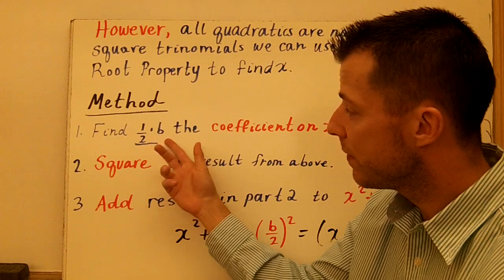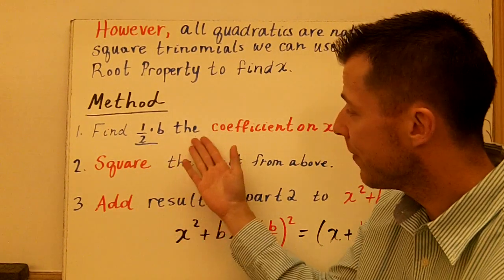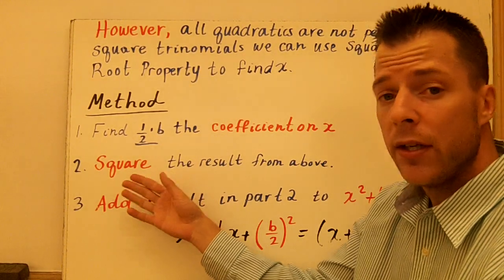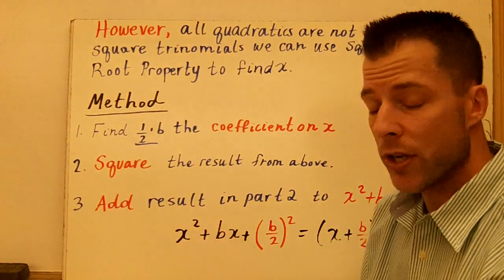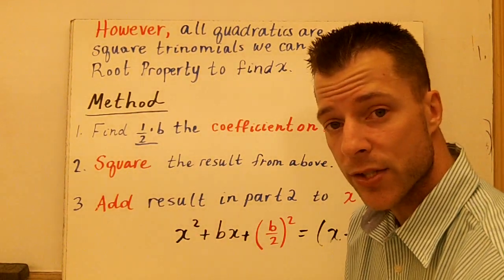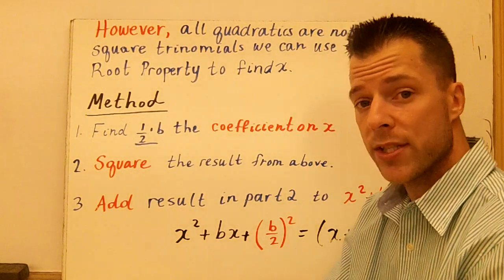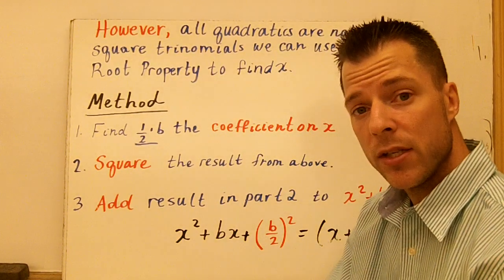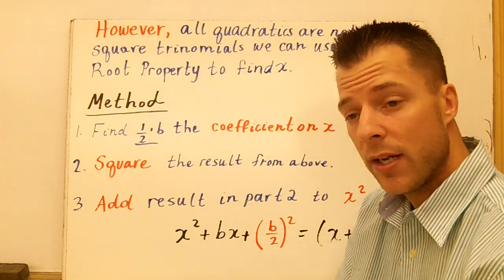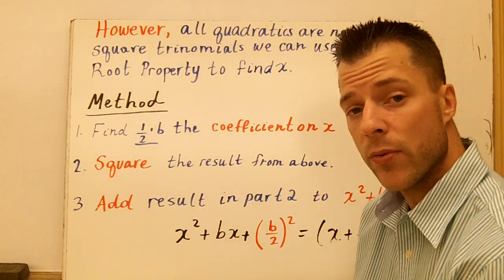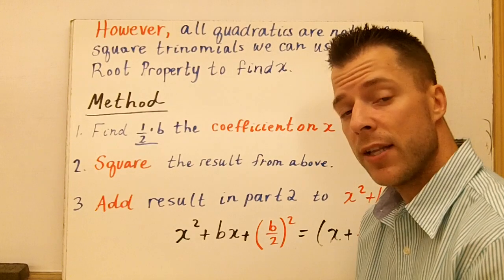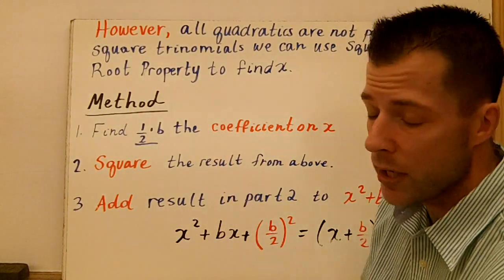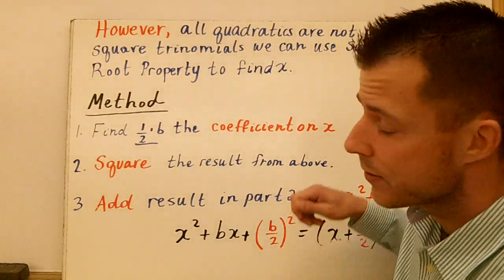First, you identify your b term and take half of that. Second, you square that term. Third, you add that result to both sides of the equation. So it's a really quick process: identify b, take half of it and square it, then add it to both sides. Once we've done that, we have a perfect square, and we can use the square root property to solve for x.